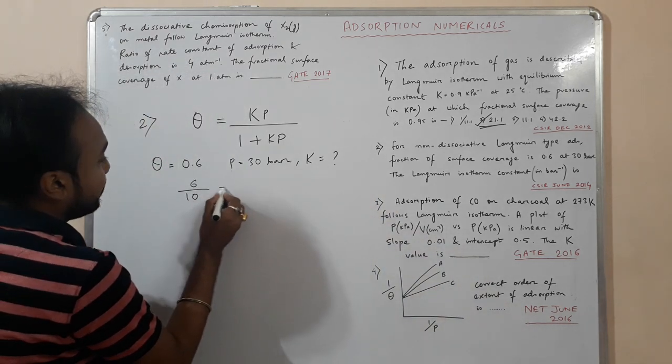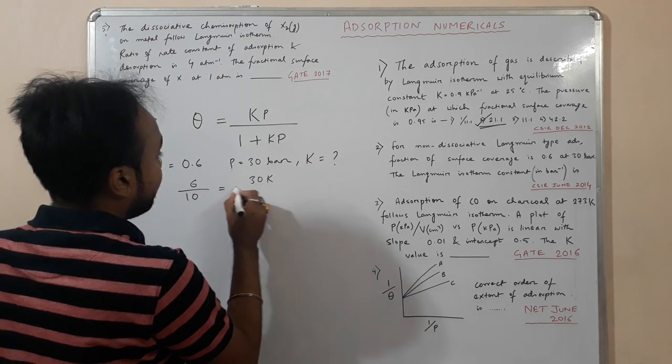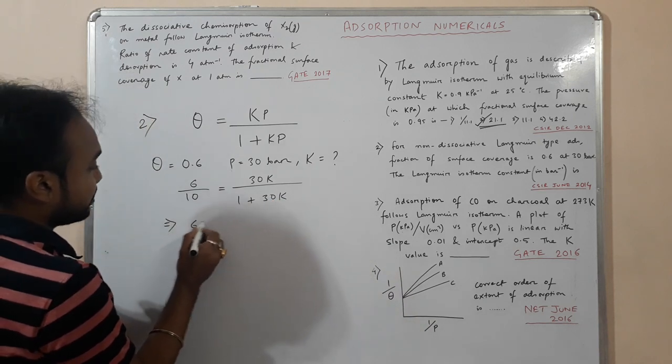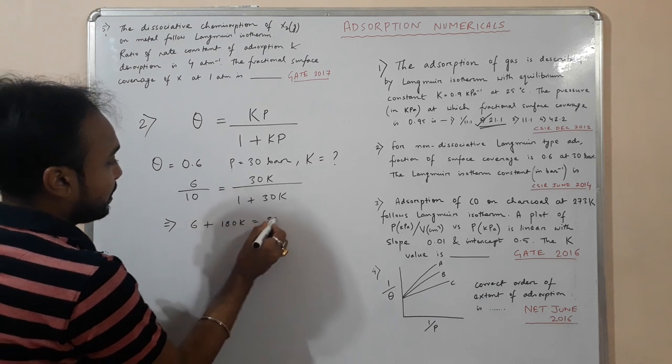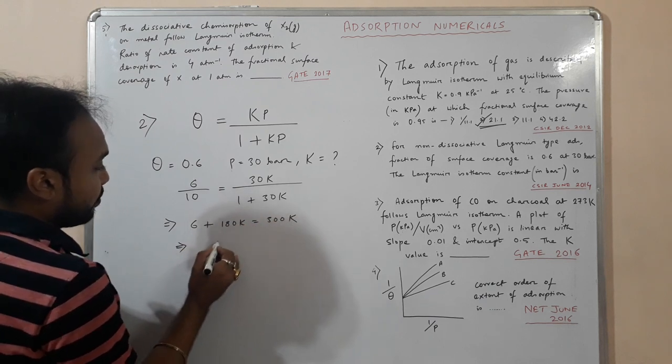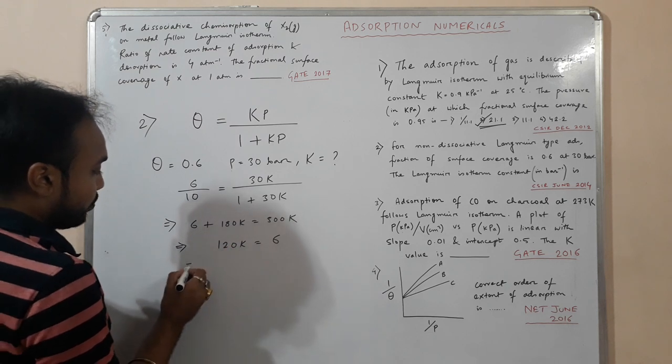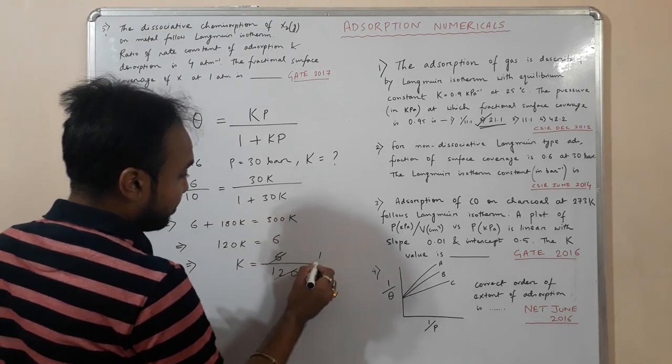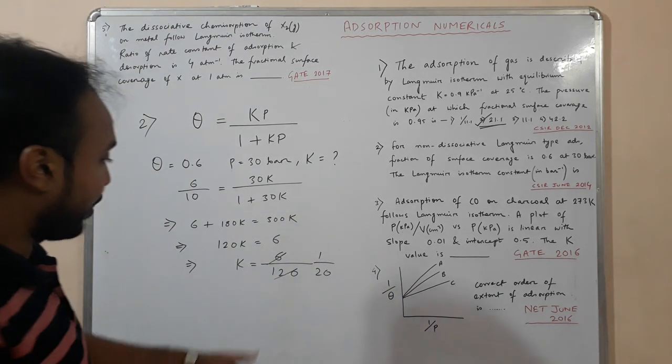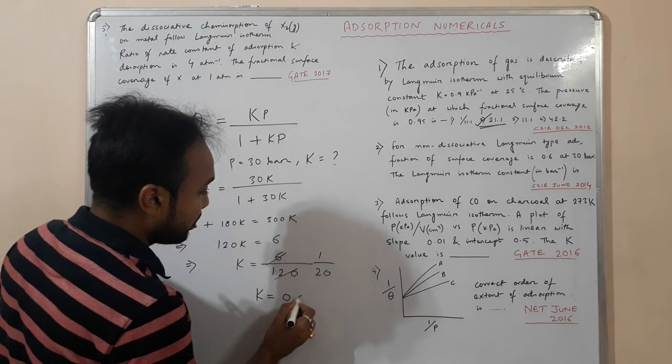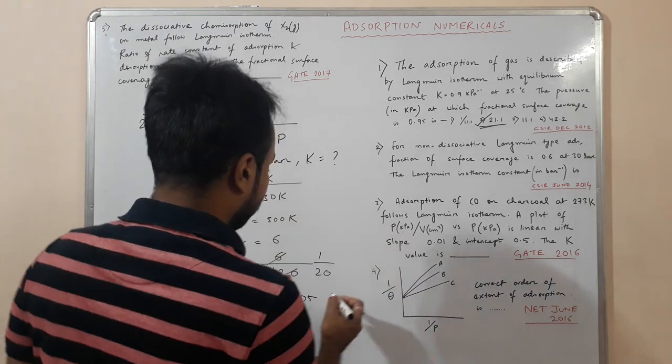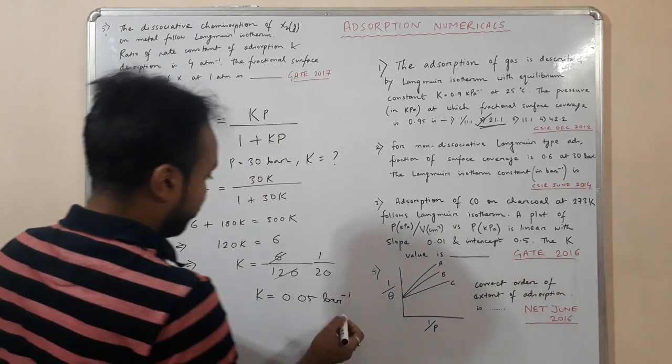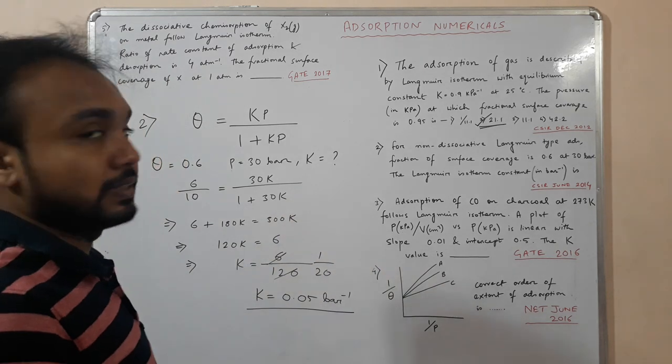So 6 by 10 equals K into 30 by 1 plus 30K. It comes to be 6 plus 180K equals 300K. That gives 120K equals 6. So K equals 6 by 120, that comes to be 1 by 20, which is 0.05. So K is 0.05 bar inverse. This is the answer.